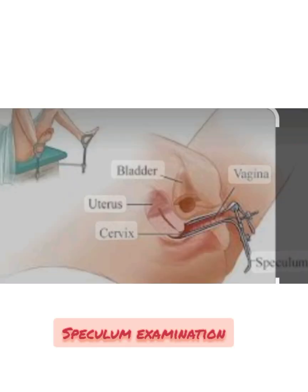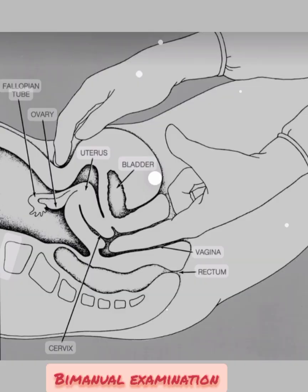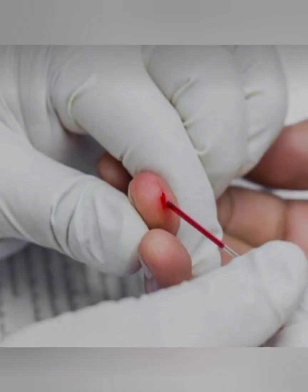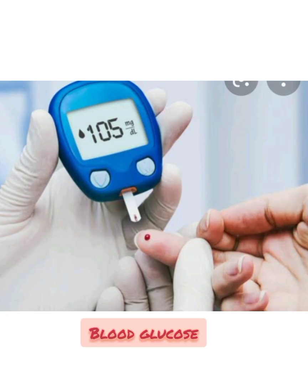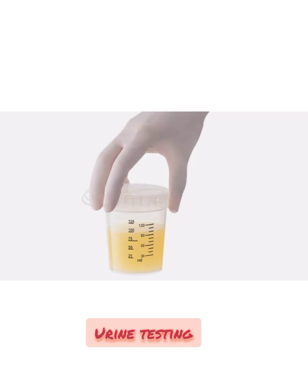We can also do speculum examination or bimanual examination. The routine investigations done at the sub-center level include hemoglobin of the pregnant lady, blood glucose level, and urine testing for protein, sugar, and pus cells. Importantly, we advise the client to clean the vulva before collecting urine in a clean container.